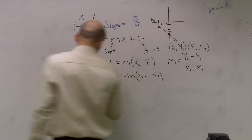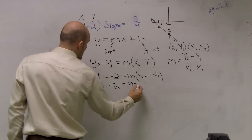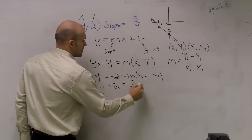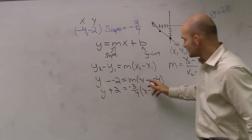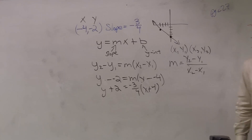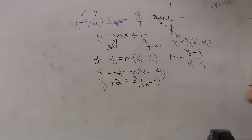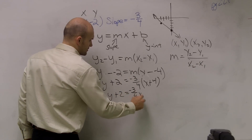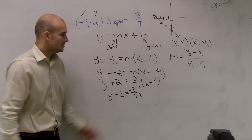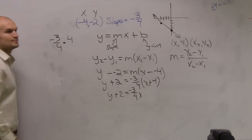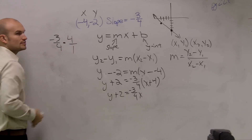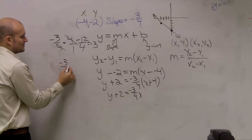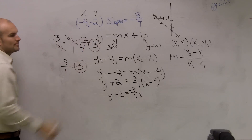So now I need to simplify. y minus a negative 2 becomes y plus 2, equals m — which is negative 3 fourths — times x. And x minus a negative 4 becomes x plus 4. Using the distributive property, I have y plus 2 equals negative 3 fourths times x, and then negative 3 fourths times 4. How do you multiply a fraction times a whole number? Change your whole number to a fraction and multiply across — or the fours just cancel out to give you negative 3 over 1, which equals negative 3.